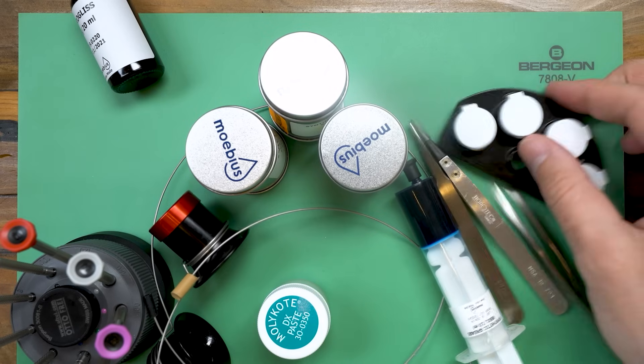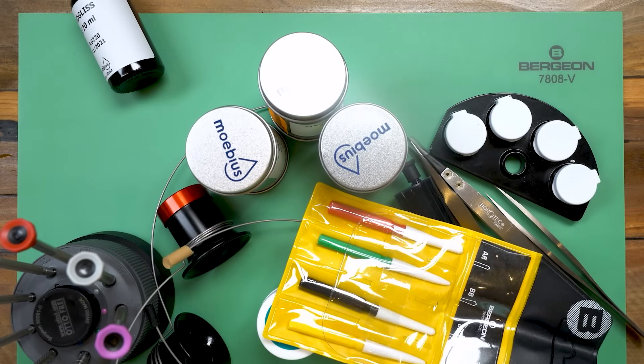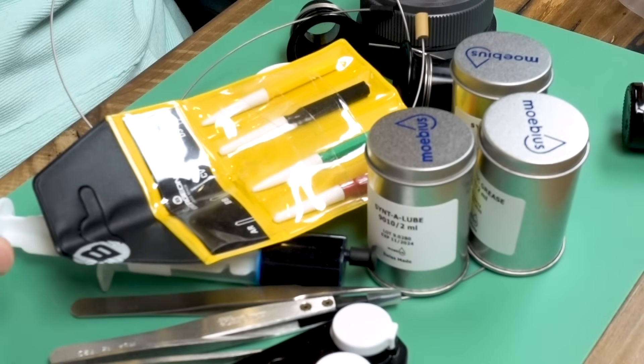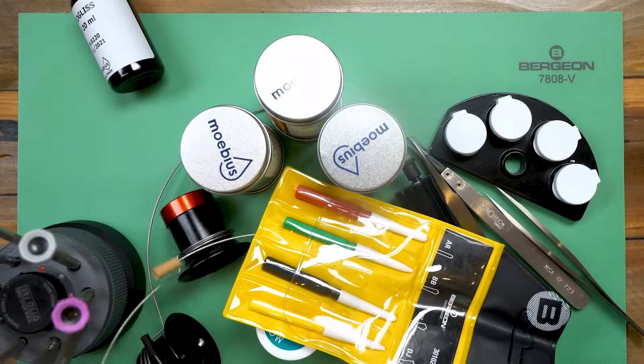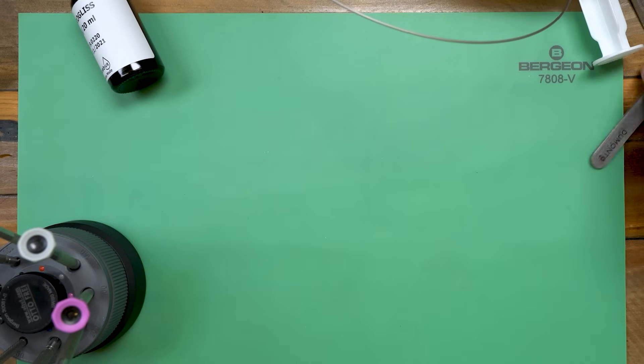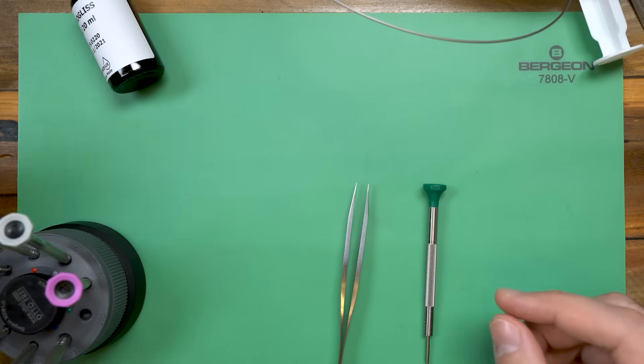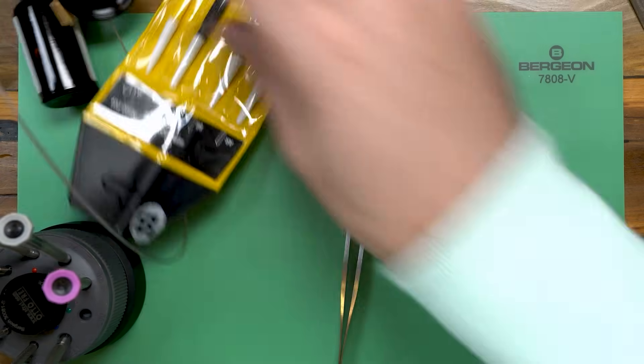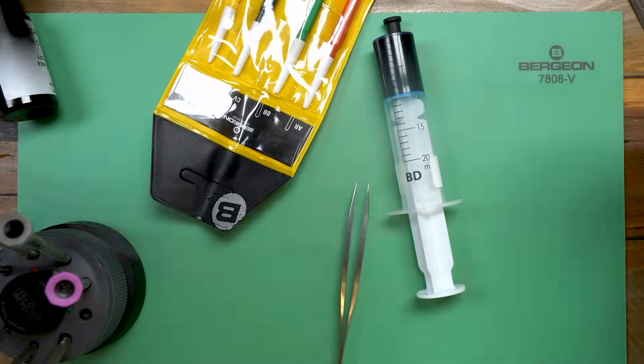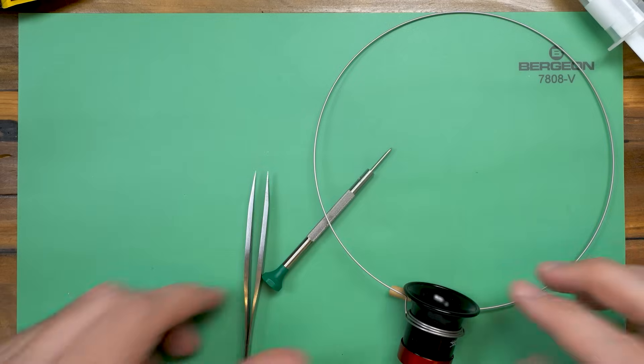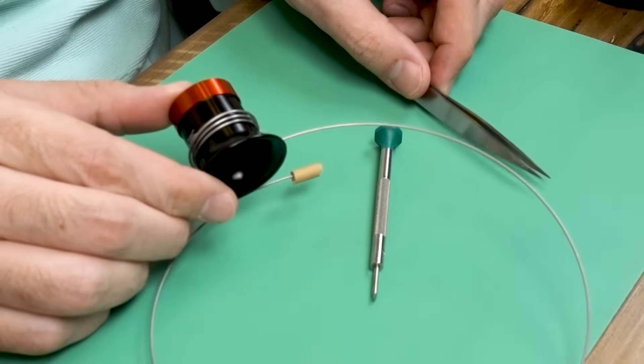And of course, that will open up all types of different repairs and things that you can address going forward. But if you're looking to take your very first steps into the hobby, you can get those first three tools that I mentioned at the top. And then if you really want to dive in and see if you can service a watch movement, this is what you're going to need for the bare bones basics. And then you can start building out the other types of tools that you'll want as you go.